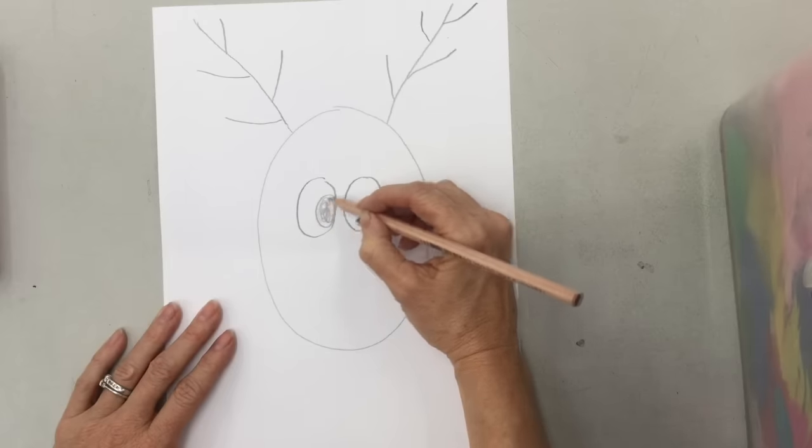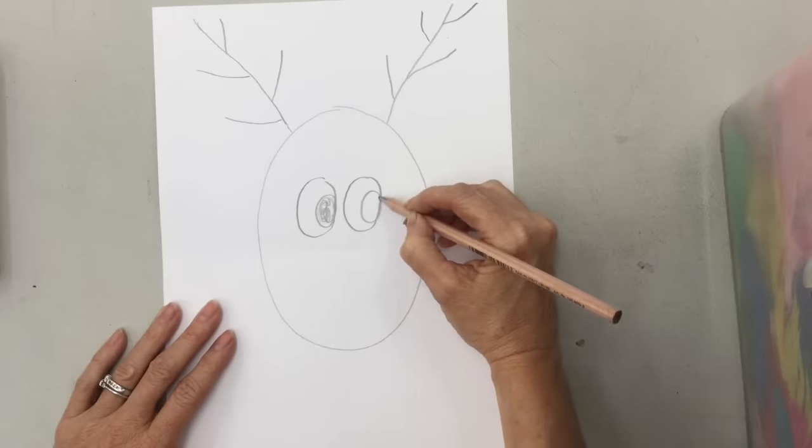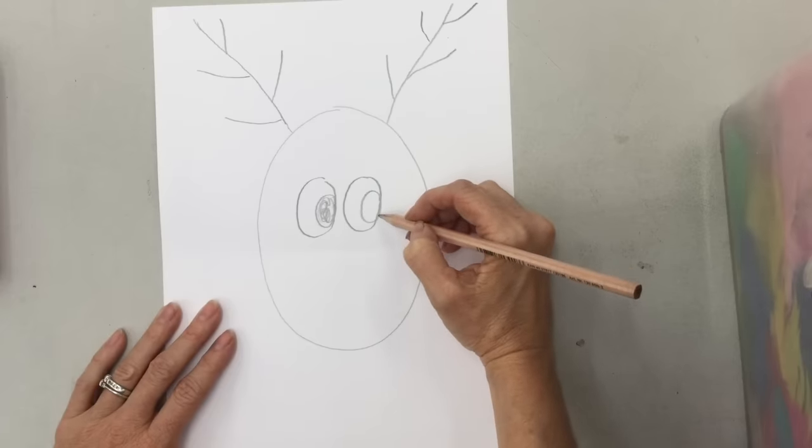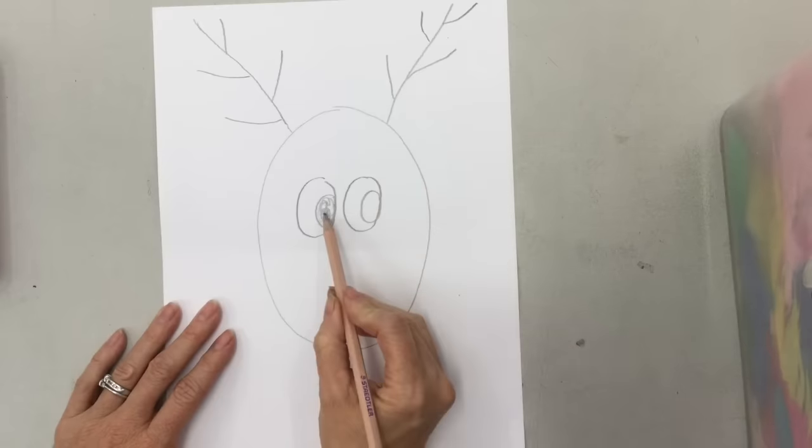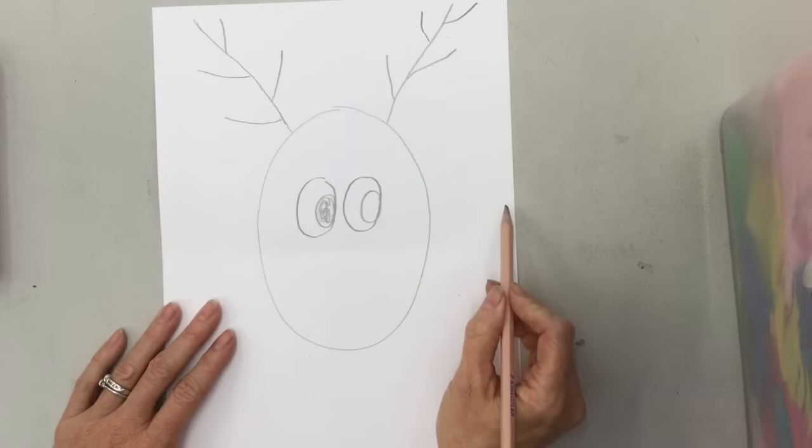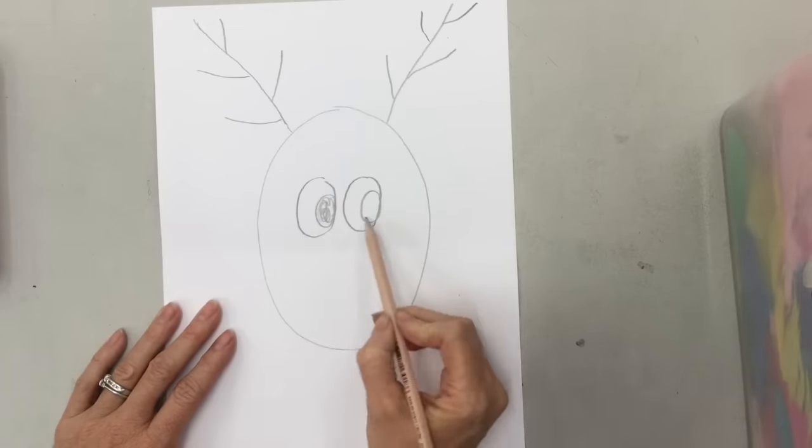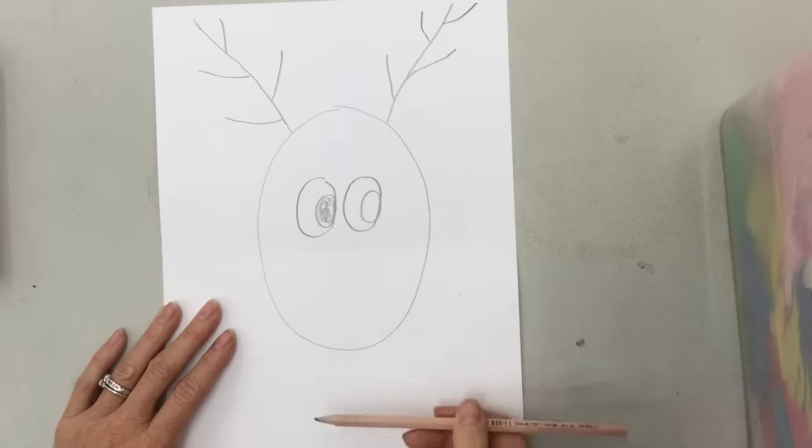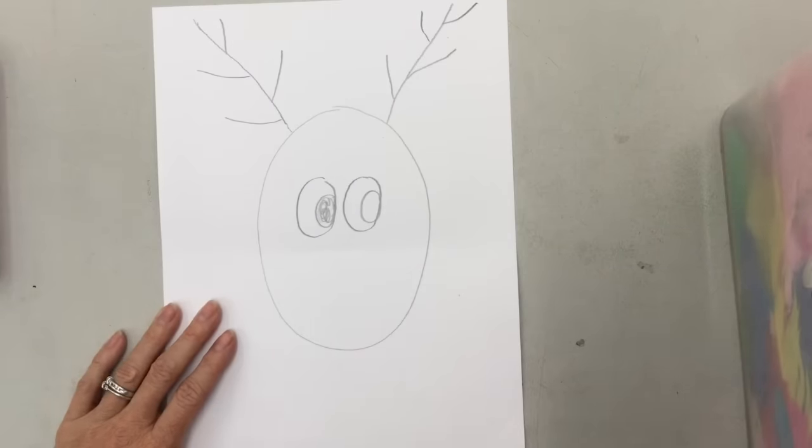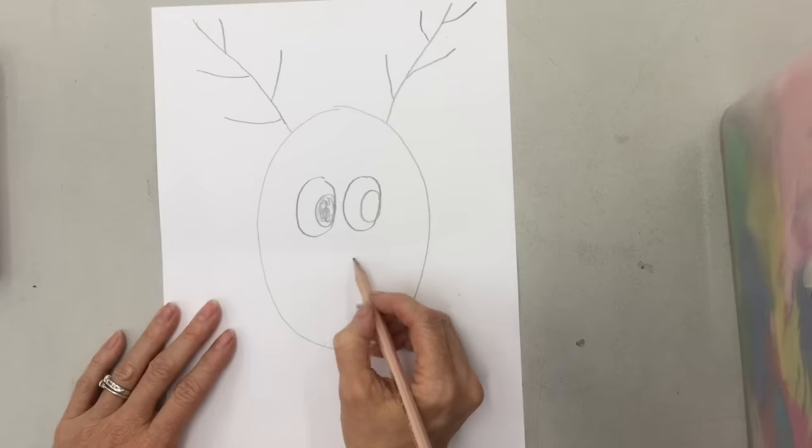Now actually you don't need to fill that in with pencil because when you color it in you can color that in with black, so I'll just stop there. So see how he's looking to the side? Now if I made my two dark circles down there it would look like he's looking down.